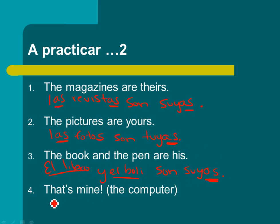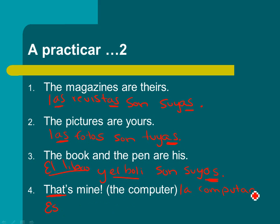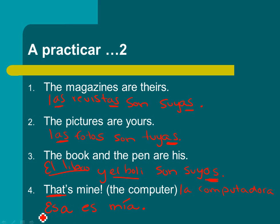And that's mine — the computer. If you know your demonstrative adjectives: this and these have T's, that and those don't — so you'd say esa. Computer is la computadora — feminine. So esa es mía — feminine again. Esa es mía. That is mine.